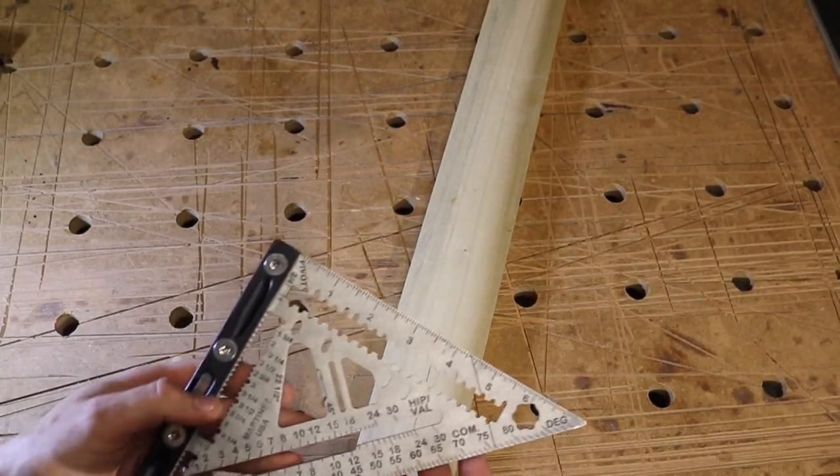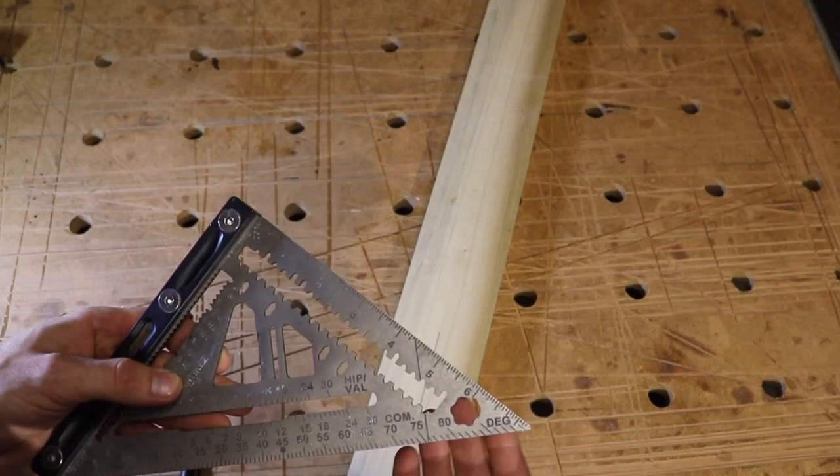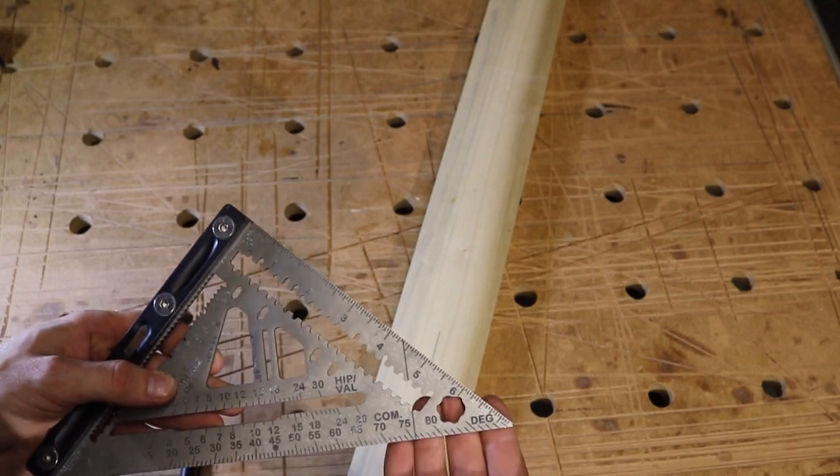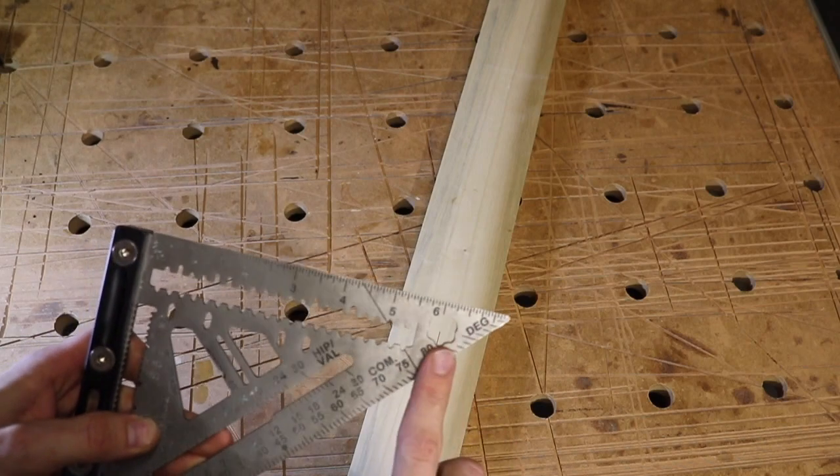Another really nice feature of this square is the fact that it has a metric and imperial socket. So whether you're trying to take your blade off of your skill saw or you're trying to take it off of your miter saw, this right here can do it.